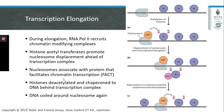A protein called FACT, which facilitates chromatin transcription, can associate with the displaced nucleosome. The FACT protein acts as a chaperone and is involved in moving the nucleosome from the position ahead of the RNA polymerase to a position behind it. FACT is also involved in deacetylating the histones on the nucleosome. Once deacetylated, the histones can re-associate with the DNA behind the RNA polymerase, resulting in recoiling of that DNA. This process occurs repeatedly until the RNA polymerase transcribes the entire mRNA.